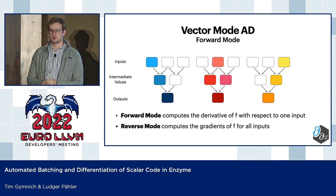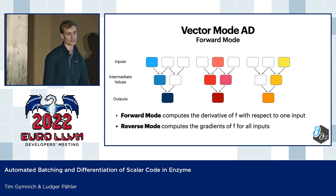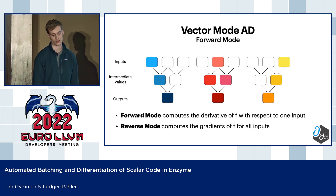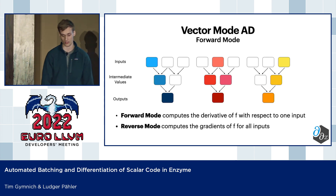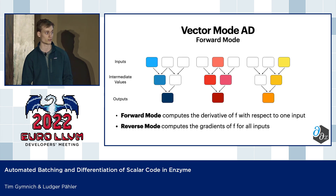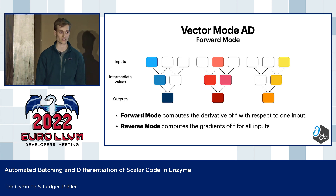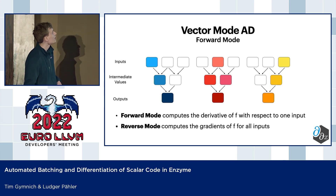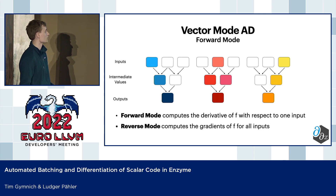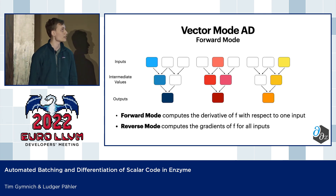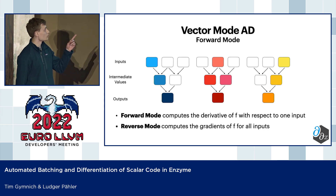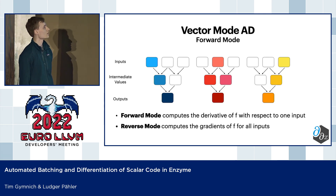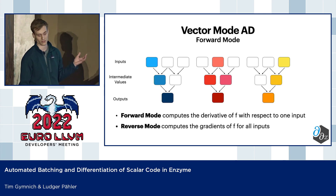With this, Tim will now start to focus on vector mode and batching. As we already heard, AD basically comes in two main flavors: forward mode and reverse mode. Forward mode gives you the derivative of a function F with respect to only one input per output. And reverse mode basically gives you the gradients of F for only one output at a time. In the graphic here, you can see that if we wanted to compute the derivative with respect to the first input, we would only want to propagate values stemming from the first input, so everything else basically needs to be masked or zeroed out.